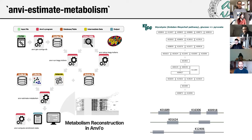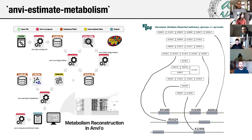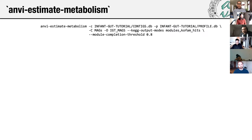There are three main programs in this suite. First, ANV-setup-KEGG-KOfams sets up the KEGG data on your computer. Second, ANV-run-KEGG-KOfams uses the KOfam profiles to annotate gene calls in your contigs databases. Third, ANV-estimate-metabolism matches those gene annotations to metabolic pathways from the KEGG module database, estimating how complete each metabolic module is. It can do this at different levels of resolution depending on input type: for an entire isolate genome, for each bin in a metagenome, or for each contig separately in an unbinned metagenome.